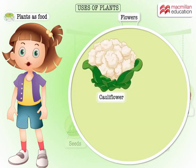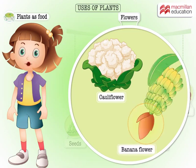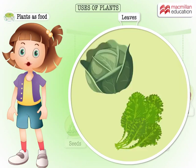Yes, the cauliflower is a flower. We also eat banana flowers. These leaves are very good for us — cabbage and spinach.